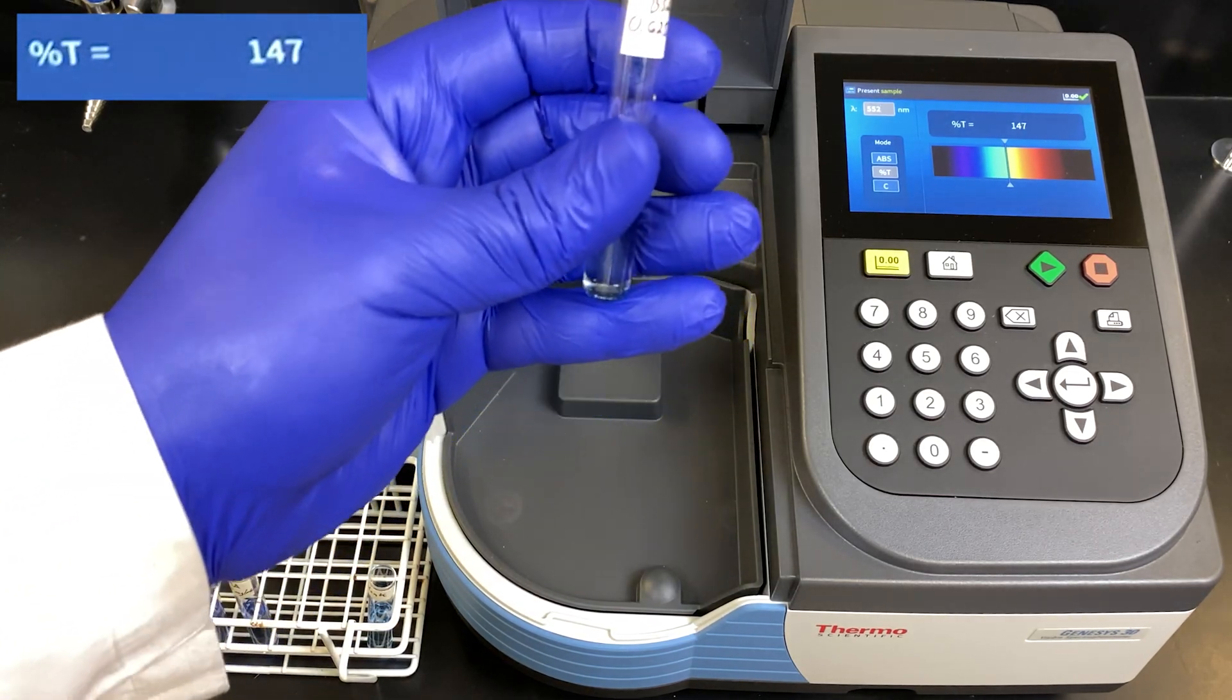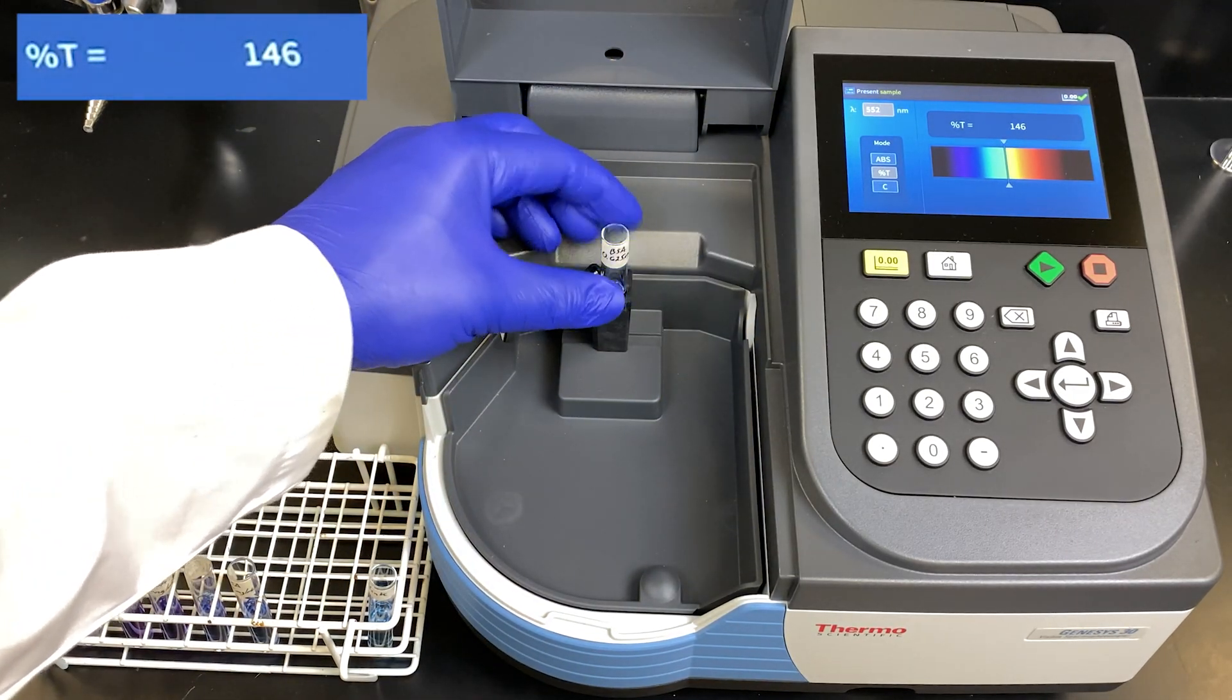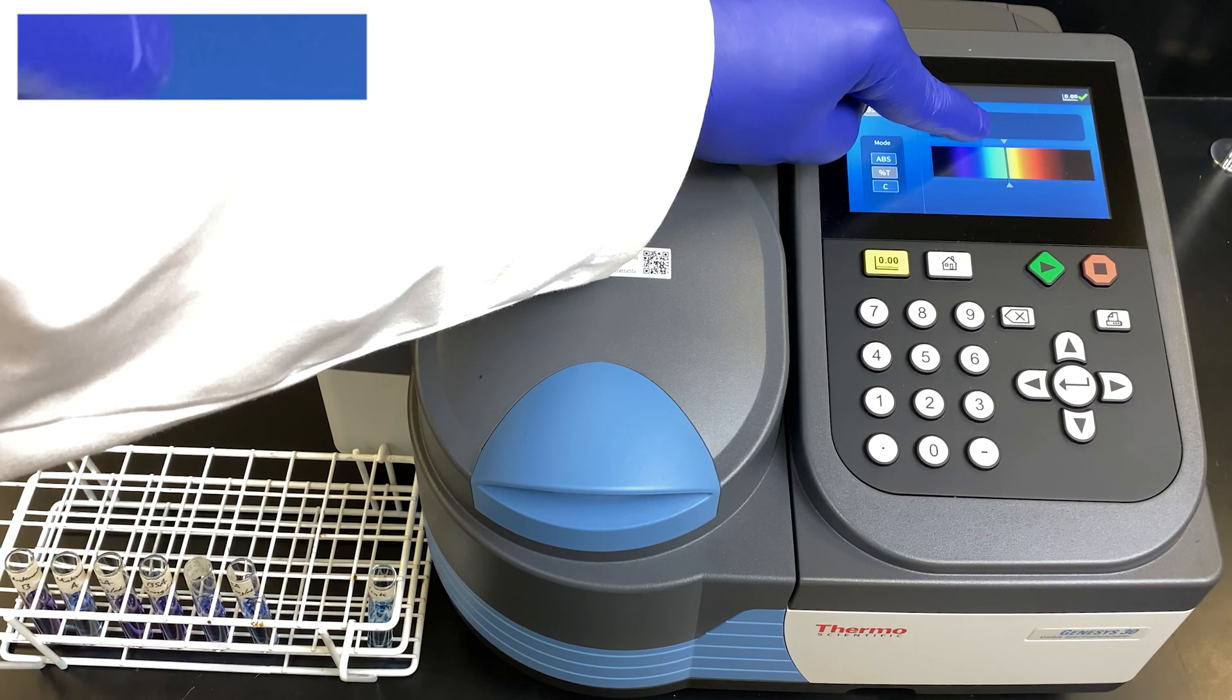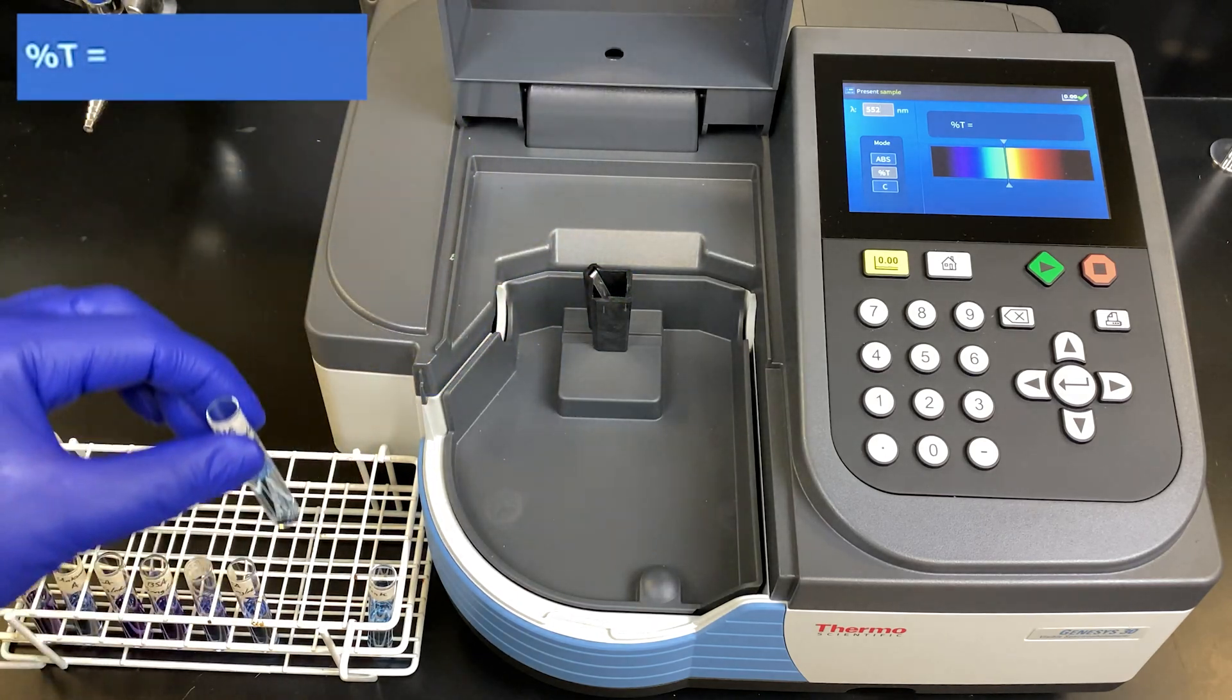We take our next sample, 0.625 milligrams per mL BSA. Place it inside. Close the door. You can read off directly. Wait for it to stabilize. We remove it. And continue on with the rest of the standards.